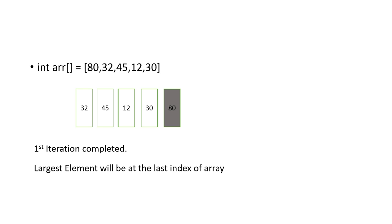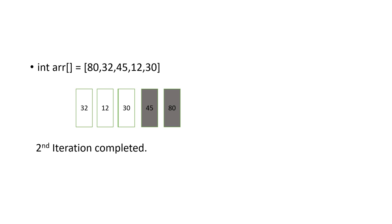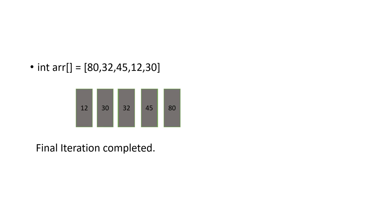So after the first iteration the largest element is at the last index. In the second iteration, 32 is compared with 45 and stays in place since 32 is smaller. Then 45 is compared with 12 — 12 moves to the second position and 45 to the third. Then 45 is compared with 30 — 30 moves to the third position and 45 to the fourth. So after the second iteration, 45 is at the second-to-last position. Similarly, the third iteration places 32, 30, and 12 in their correct positions, completing the sorted array.